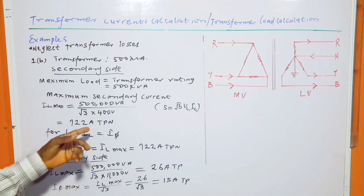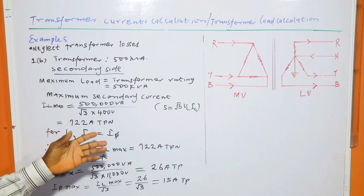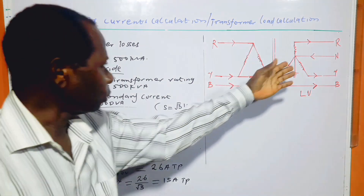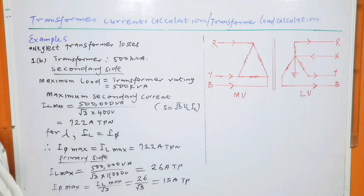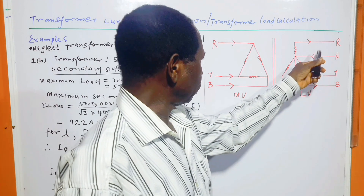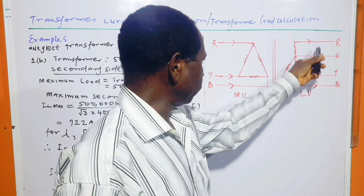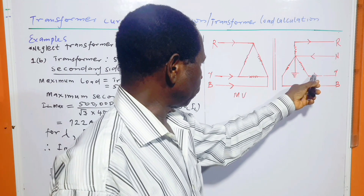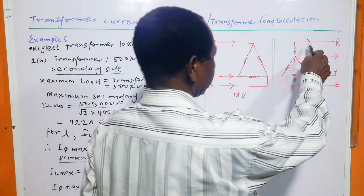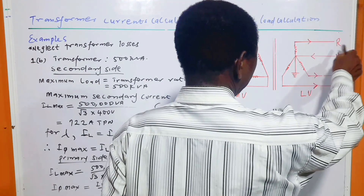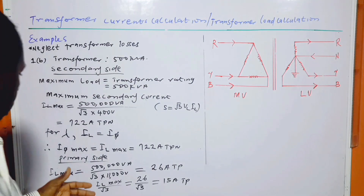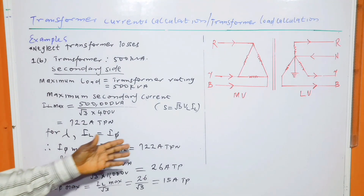From I = S / (√3 × V_line), the maximum secondary line current is 722 amperes, three-phase with neutral. That is the line current — the current flowing into the load from the transformer winding.